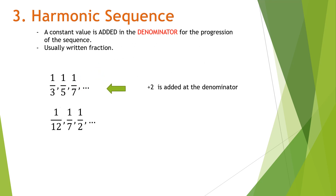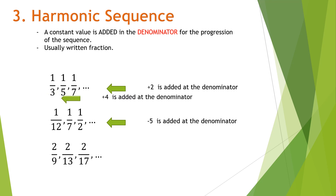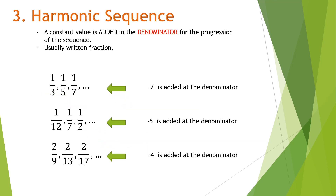Another example: 1/12, 1/7, 1/2. A number is being subtracted from the denominator, but this still falls under harmonic sequence because the progression happens only on the denominator part — we can say negative 5 is added to the denominator. Last example: 2/9, 2/13, 2/17. Positive 4 is added to the denominator. If changes happen on the denominator only by adding a constant number, it falls under the harmonic sequence.